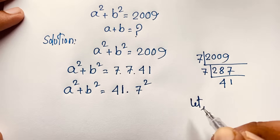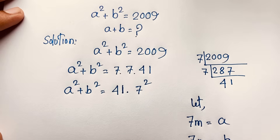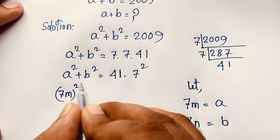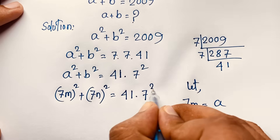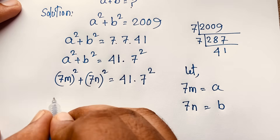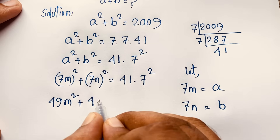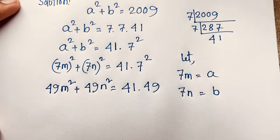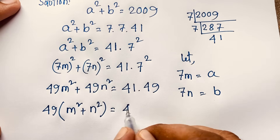Suppose that a equals 7m and b equals 7n. Then a squared plus b squared becomes (7m)² plus (7n)², which equals 49m² plus 49n², and this equals 41 times 49. Since 49 is common, we get m squared plus n squared equals 41 times 49.